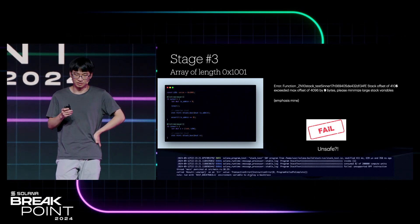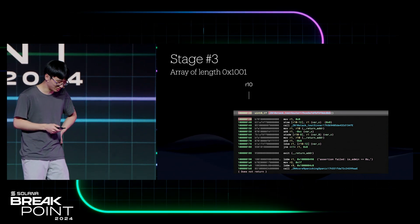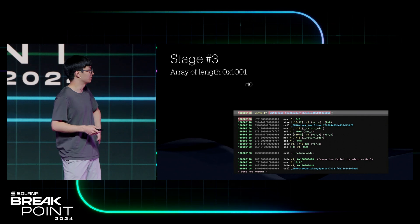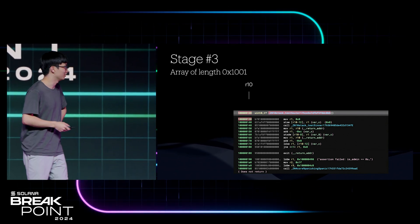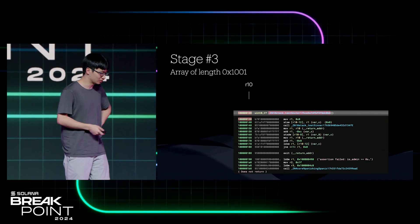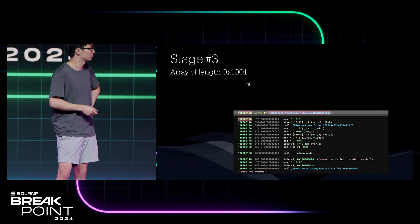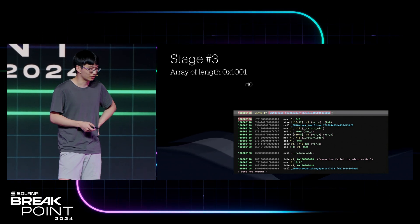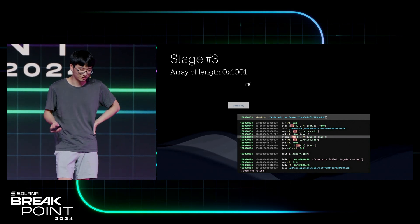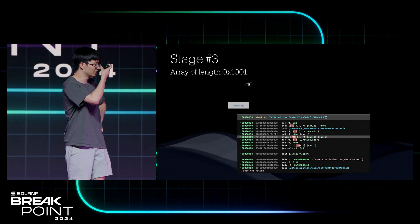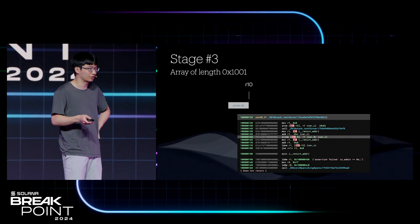Let's look at what actually happens at a lower level — this is all assembly. As a brief primer, you have a bunch of registers. R10 is the stack pointer, corresponding to the stack. So when you start the function call of outer, you have R10 set to some value. Then you allocate a pointer on the stack. You can see the line I highlighted where you do R10 minus 8 — you take the pointer R10, subtract 8, and allocate a variable there.